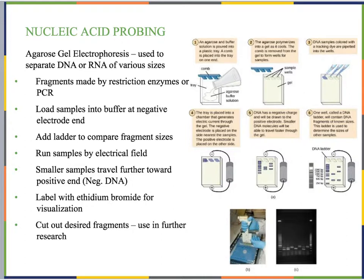Another widely used technique is agarose gel electrophoresis. This is used to separate either DNA or RNA based on its size. A box contains an agarose buffer solution, then an agarose gel is poured in and allowed to solidify. Before it solidifies, a comb is placed in it — similar to agar in petri dishes — which creates little wells in the gel.